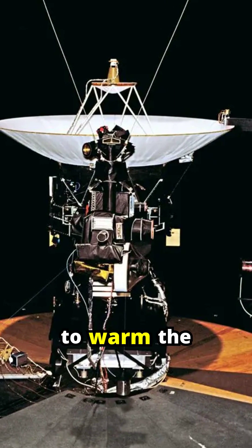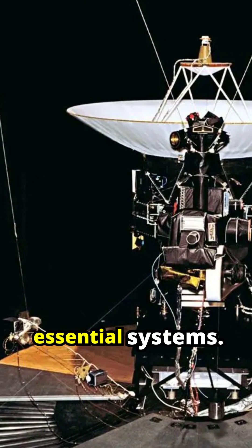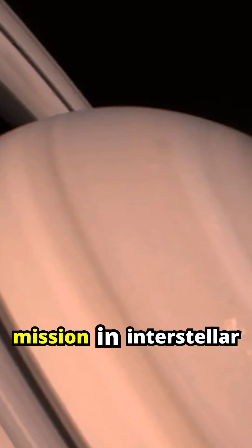Turning on heaters to warm the cold thrusters required careful power management, even risking the temporary shutdown of essential systems. Their strategy paid off. By carefully reallocating power, they successfully warmed the thrusters, ensuring Voyager 1 could continue its mission in interstellar space.